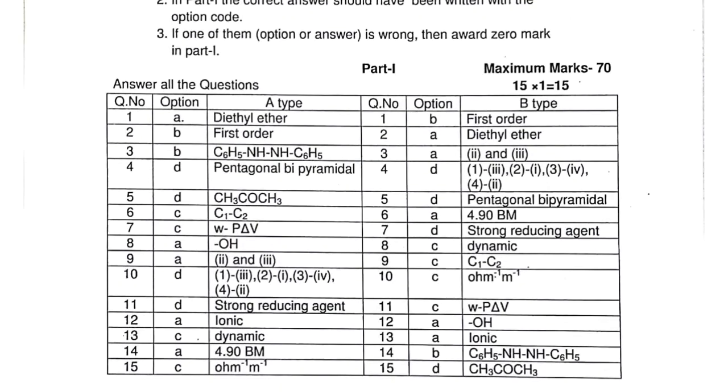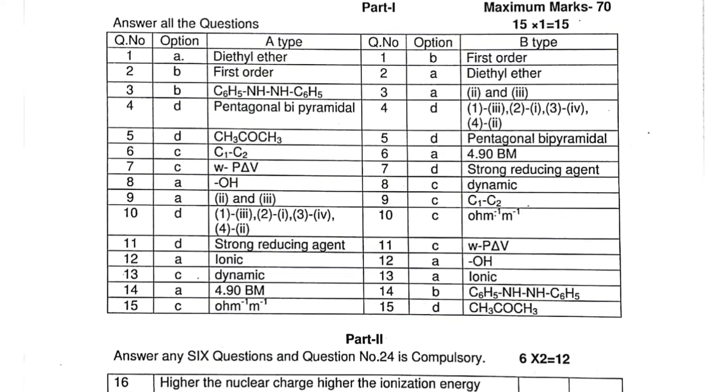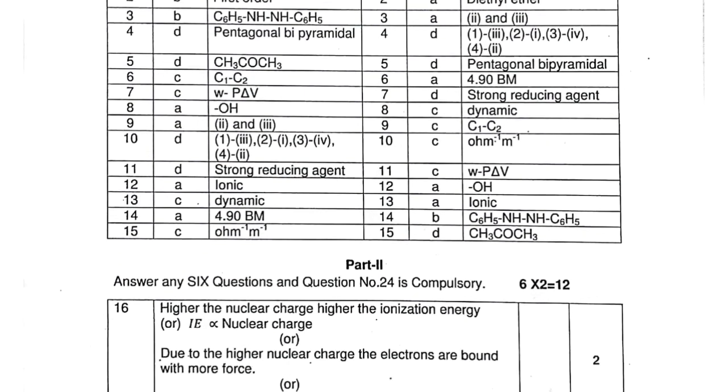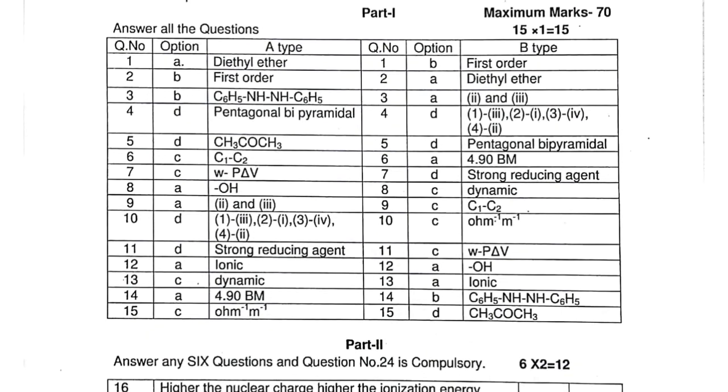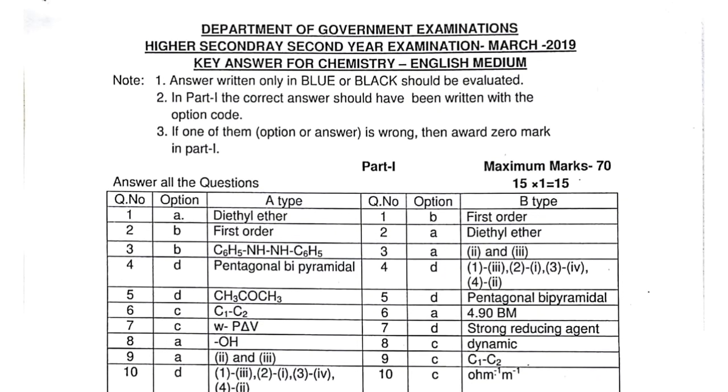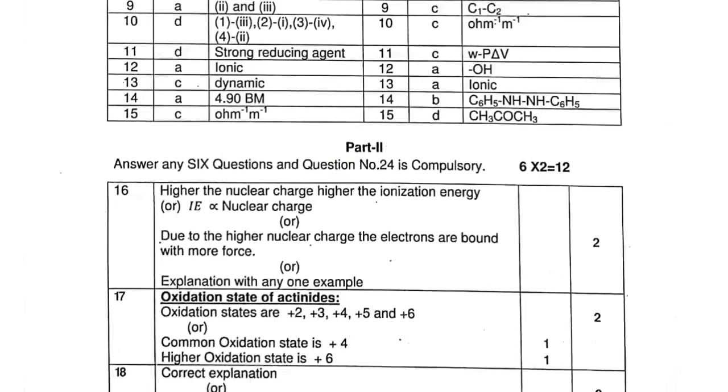That was the tentative answer key. This is the government official answer key. We'll look at the one mark questions for Type-A and Type-B in Part-1, then move to Part-2.